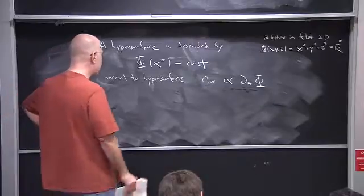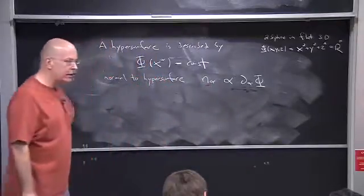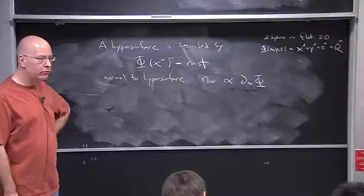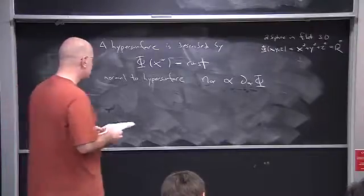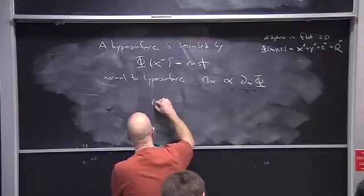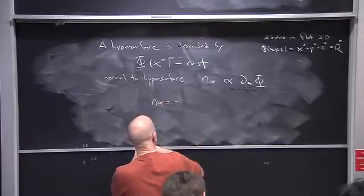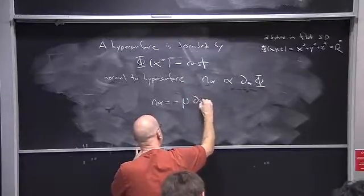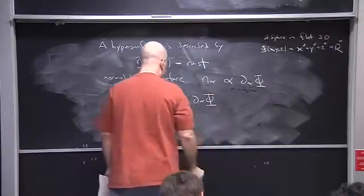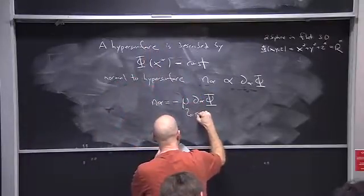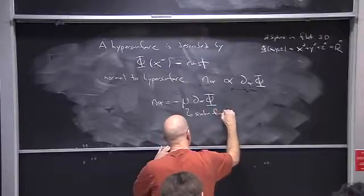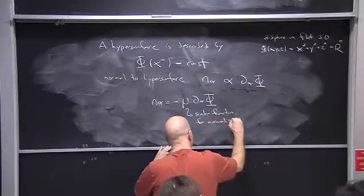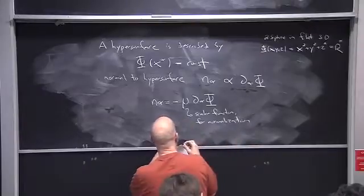Usually we like the normal vector to be normalized, so I'm going to put in a factor in front to normalize it. I write n_α = –μ ∂_α φ, where μ is a scalar field for normalization. This is normalized.